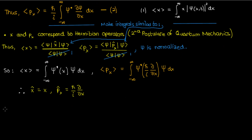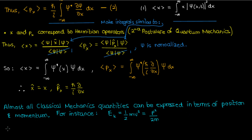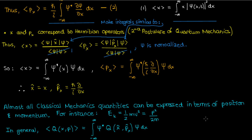Why do I care so much about position and momentum specifically? There are two reasons. One reason is that they appear in the Heisenberg uncertainty principle, which I'm going to derive in the next video. The second reason is that almost all classical mechanics quantities can be expressed in terms of position and momentum. For instance, kinetic energy is half mv squared, which can also be written as p squared over 2m. The same idea applies to angular momentum, potential energy, and so on. So in general, we can find the expectation value of almost any classical mechanics quantity q by using the operators x-hat and p-hat. That's why x-hat and p-hat are important.